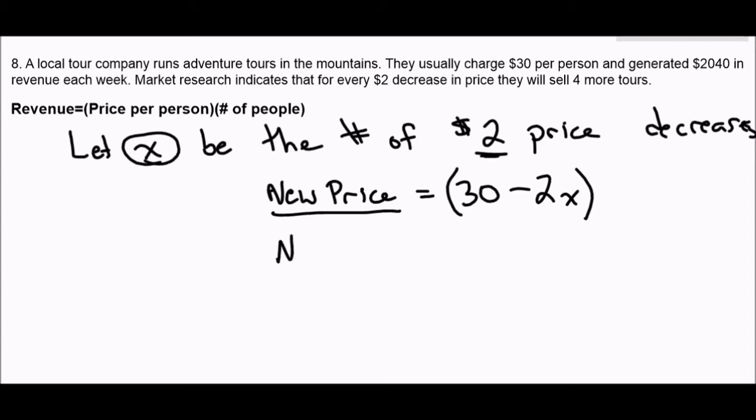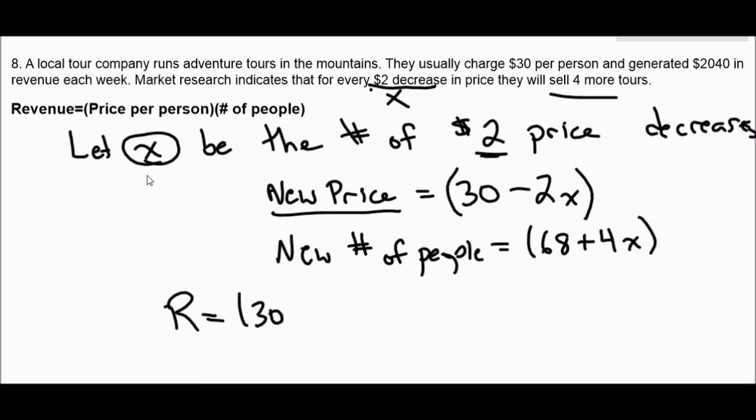We also need to look at new number of people because that also changes every time we change X. We started with 68 people, but then every time we did X, every X meant four more people were buying tour tickets. So this is the number of people we have now. And that gives us our equation for revenue. Revenue is price per person times number of people. The price per person is going to be 30 minus 2X, and the number of people will therefore be 68 plus 4X. What I've done is I've created an equation that is quadratic.